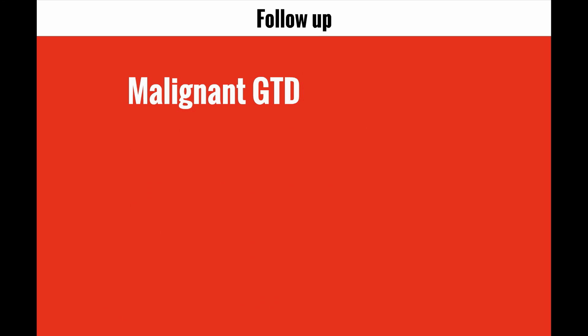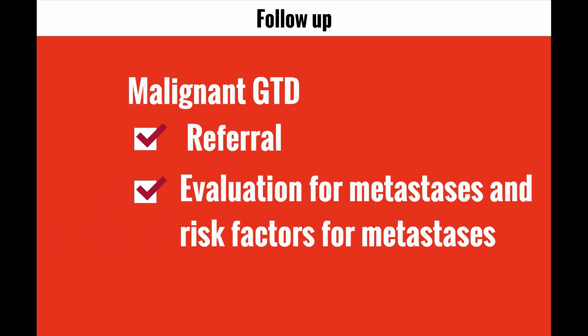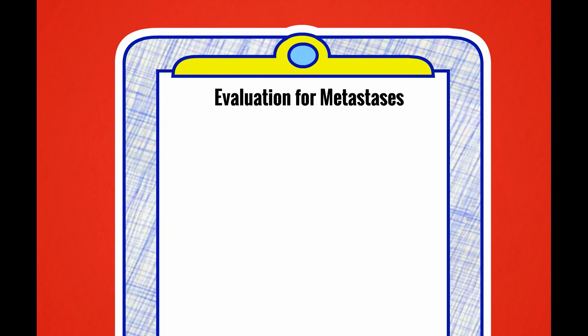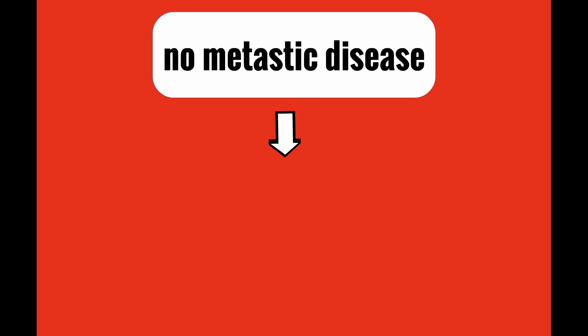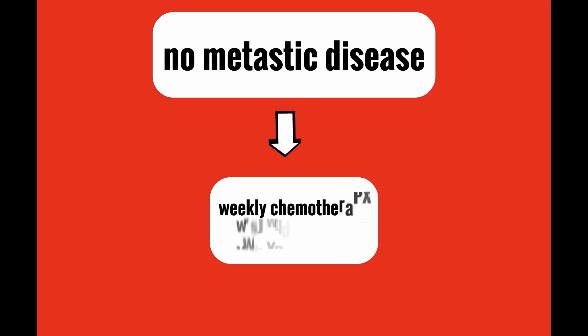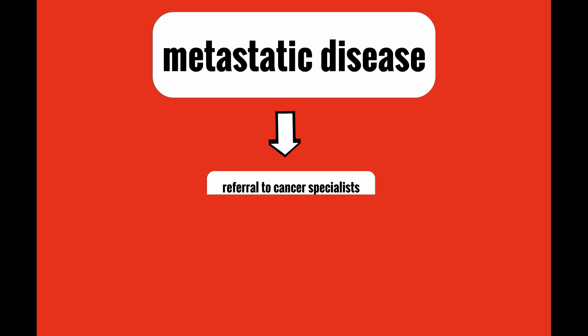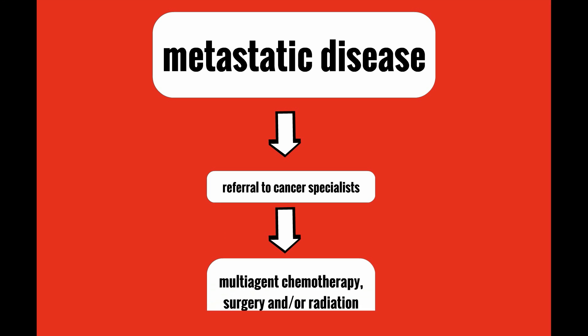If malignant GTD is diagnosed, many patients will be referred to a cancer specialist and there should be an immediate evaluation for metastases, including blood tests and imaging studies. If there is no metastatic disease found, the patient can be treated with weekly intramuscular methotrexate chemotherapy, with a cure rate close to 100%. Hysterectomy will shorten the duration and amount of chemotherapy required but is not necessary for patients who wish to preserve childbearing. If metastatic disease is found, the patient should be referred to a specialist for possible cancer staging and treatment with multi-agent chemotherapy and possibly radiation.